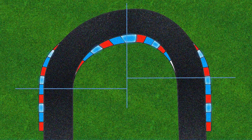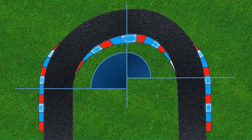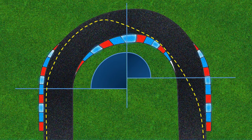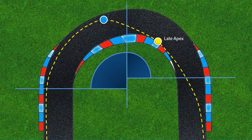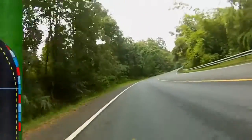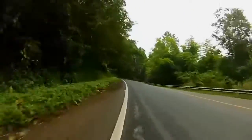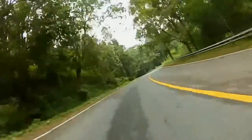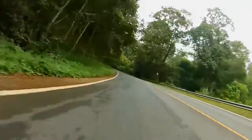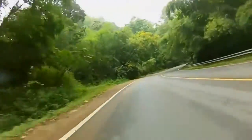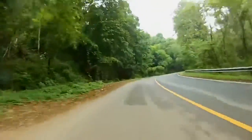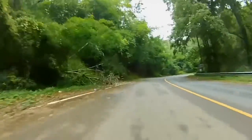Our third and final corner type is that of a decreasing radius — a corner that has a larger radius at the beginning with a smaller radius at the end. In other words, the corner tightens up. Both turn-in and apex are later than that of either an increasing radius or a constant radius corner. In fact, a late entry for a decreasing radius corner is critical. Unfortunately, there is no way to spot a decreasing radius corner until you're almost halfway through it. Upon entry, it will look just like a standard constant radius corner. Just before the corner tightens up, you'll see the vanishing point appear to come closer to you. With practice, you'll begin to spot this quickly and ensure you're nice and wide in the corner to make a late apex.